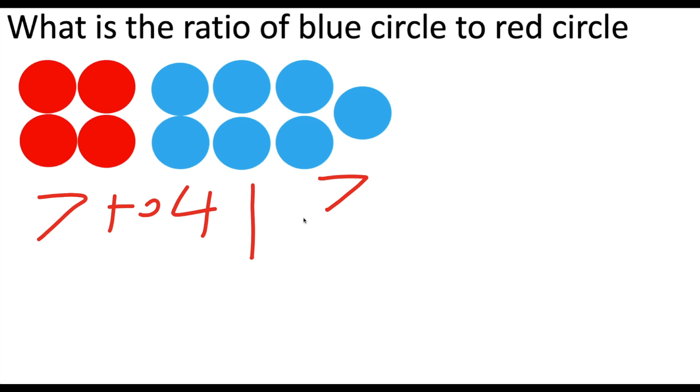You could also write it as a fraction. So seven divided by four. And you can also write it as seven colon four. And they all are used to show the same thing. Seven blue circles to four red circles. And that's pretty much it regarding ratios.